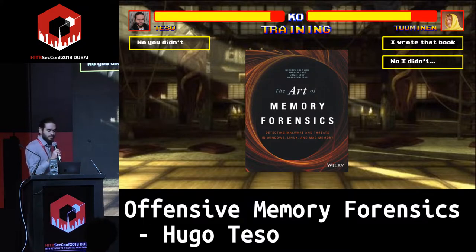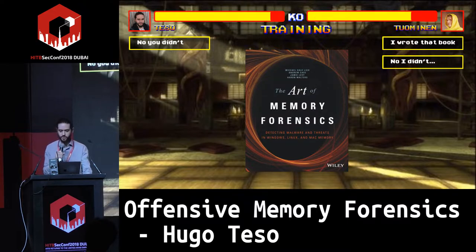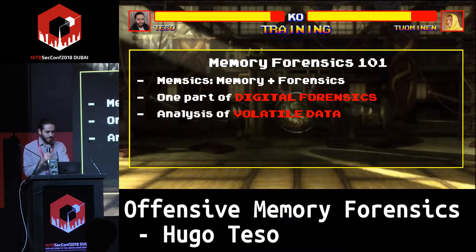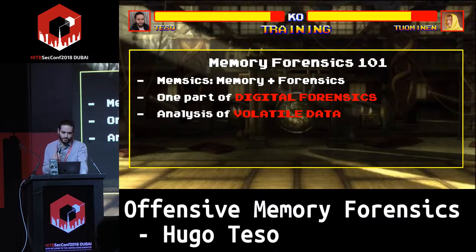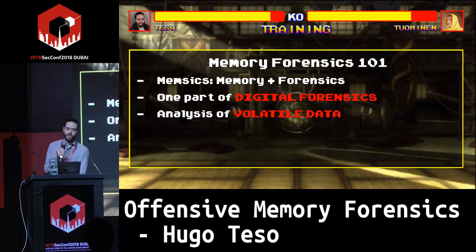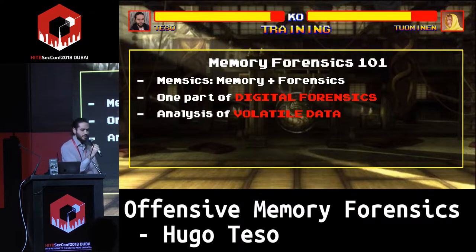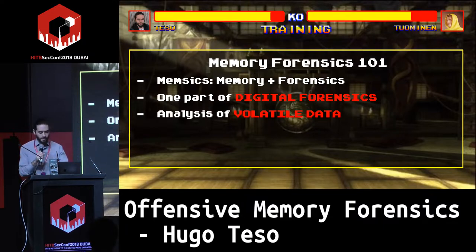I started reading about the art of memory forensics. I'm going to call it 'memsics' because I like to shorten words. Memsics is the part of the digital forensics discipline focusing specifically on the analysis of volatile data. It has some advantages over disk forensics and network forensics, some drawbacks, and it's a complex, complicated discipline with a lot of theory. After reading and reading, I realized I had to stop and take a step back.